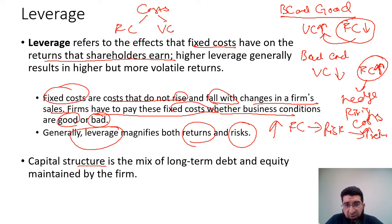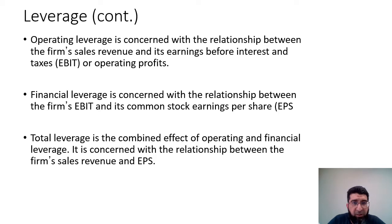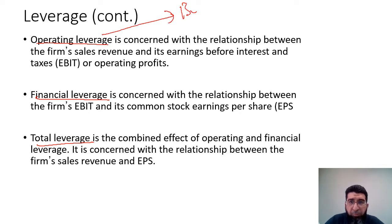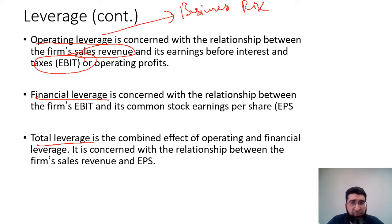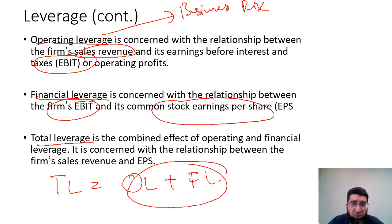Capital structure is the mix of long-term debt and equity maintained by the firm. In that context, we have different types of leverage: operating leverage, financial leverage, and total leverage. Operating leverage, also called business risk, is concerned with the relationship between the firm's sales revenue and EBIT. Financial leverage is concerned with the relationship between EBIT and common stock earnings per share. Total leverage is the combined effect of operating and financial leverage.